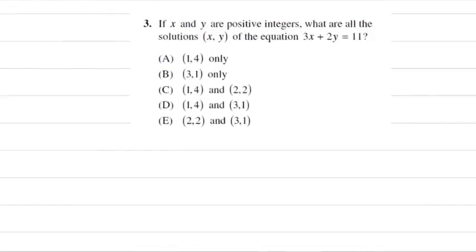Here's a problem from College Board's 2011 practice test. If X and Y are positive integers, what are all the solutions of the equation 3x plus 2y equals 11? They're giving us a handful of solutions: 1, 4; 3, 1; 2, 2; and these repeat. So those are the only three unique solutions. We need to figure out which solutions work.